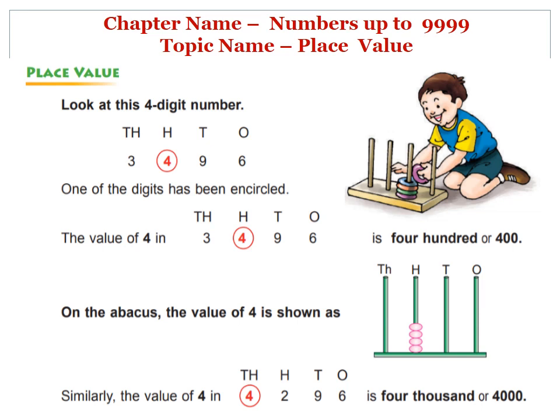We have to show the value of 4 on the abacus. That is in the column of 100. Let us take another example of a 4-digit number. The number is 4296. Here, 4 is the encircled digit. So, we have to write the value of the encircled digit only. So, the value of 4 is 4000.